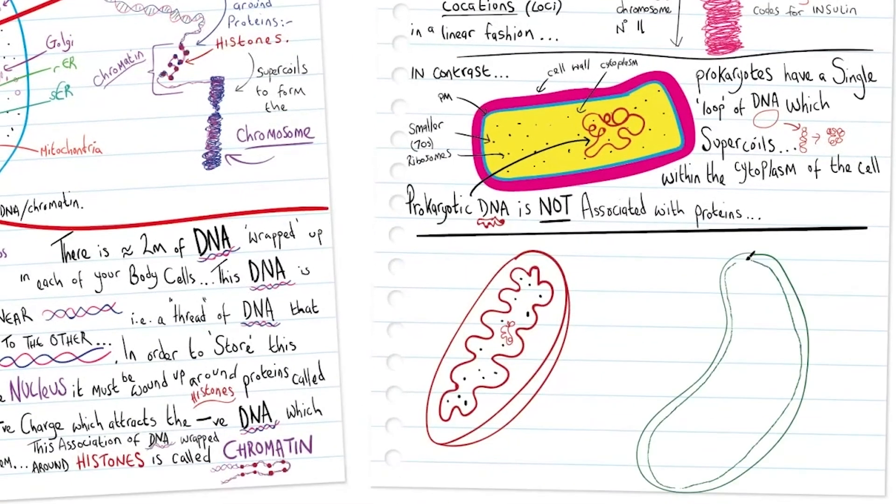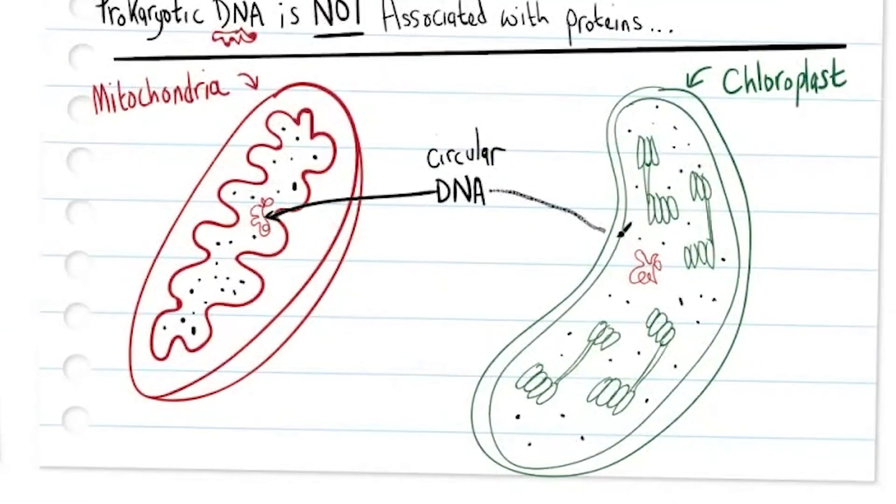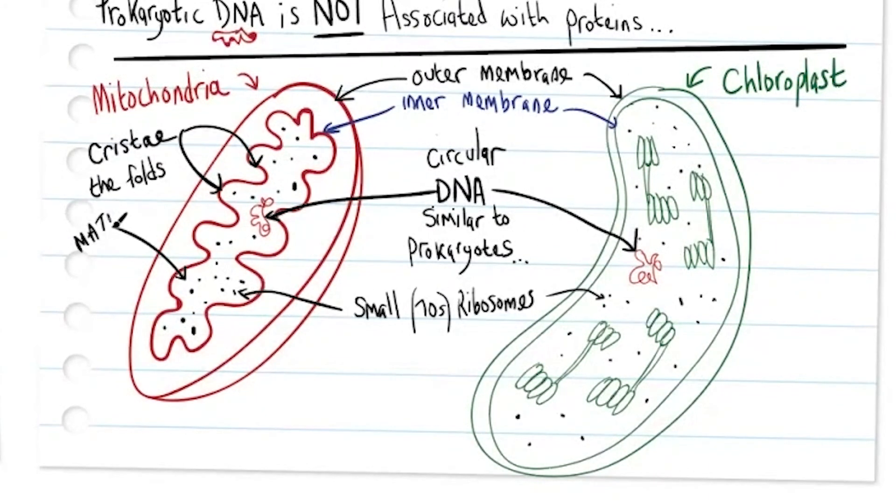And finally, very similar to bacterial cells are mitochondria and chloroplasts, and they have their DNA which is circular DNA, very similar to prokaryotes, free floating within them—within the matrix or the stroma of those organelles.